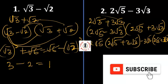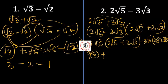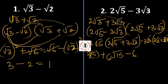That becomes: 2√5 times 2√5 is 4 into √5 squared, and √5 squared is 5. Plus 2√5 times 3√3 is 6√15. Minus 3√3 times 2√5 is minus 6√15. Minus 3√3 times 3√3 is minus 9 times √3 squared, which is 3.